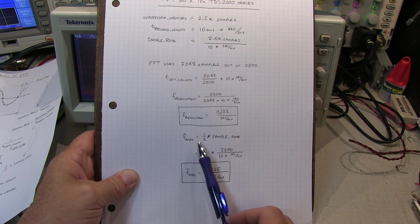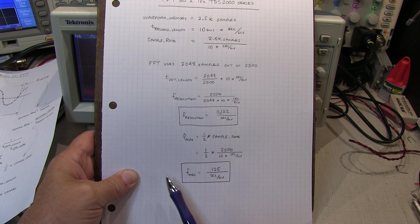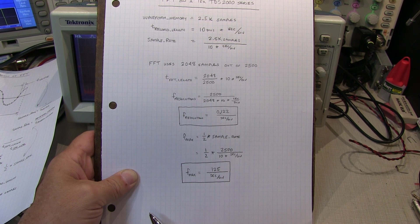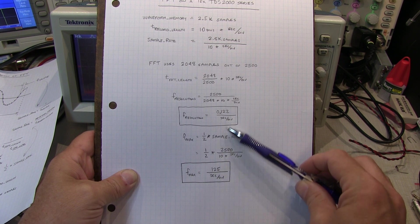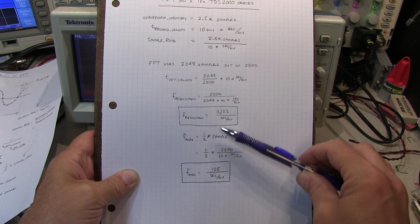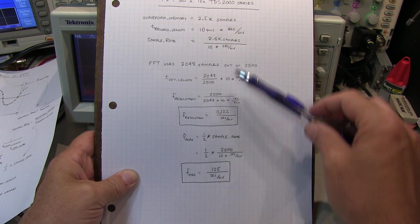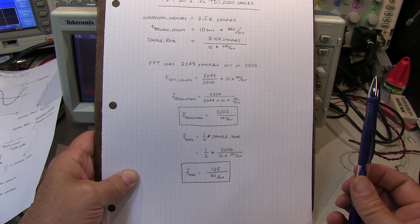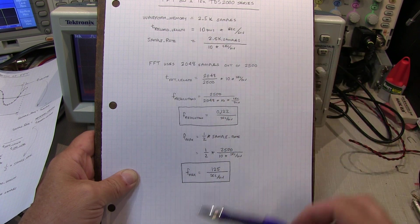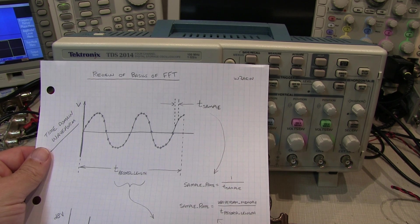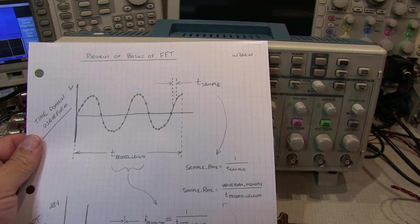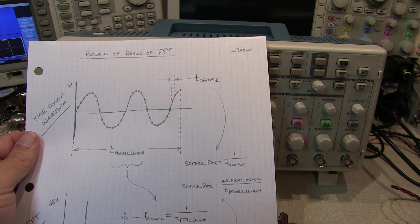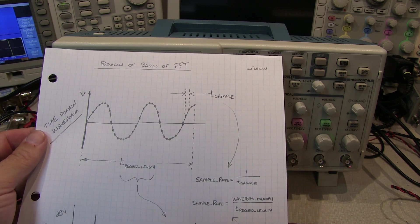The maximum frequency coverage of the FFT equals one-half the sample rate, which simplifies to 125 divided by the seconds per division. Both the maximum frequency and the frequency resolution of the FFT come down to where you've set the horizontal scale in seconds per division, with the fixed waveform memory factored in. If you're applying this to a scope with different memory, adjust those numbers accordingly. I hope you enjoyed this review of how to use the FFT on a TDS 1000 or 2000 series scope — please give a thumbs up, subscribe to the channel, and comments and questions are always welcome.